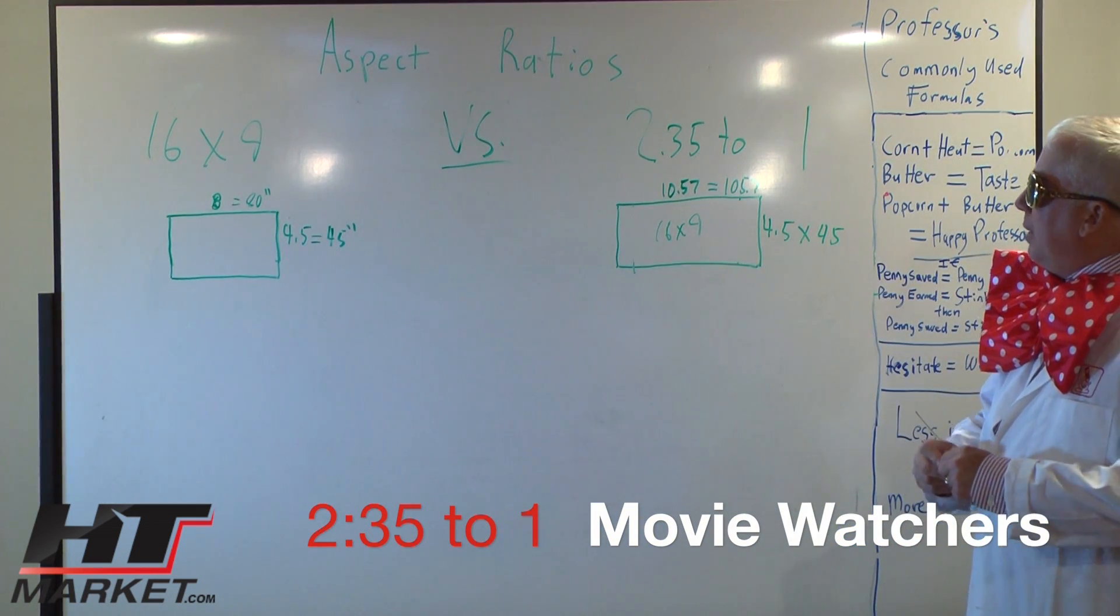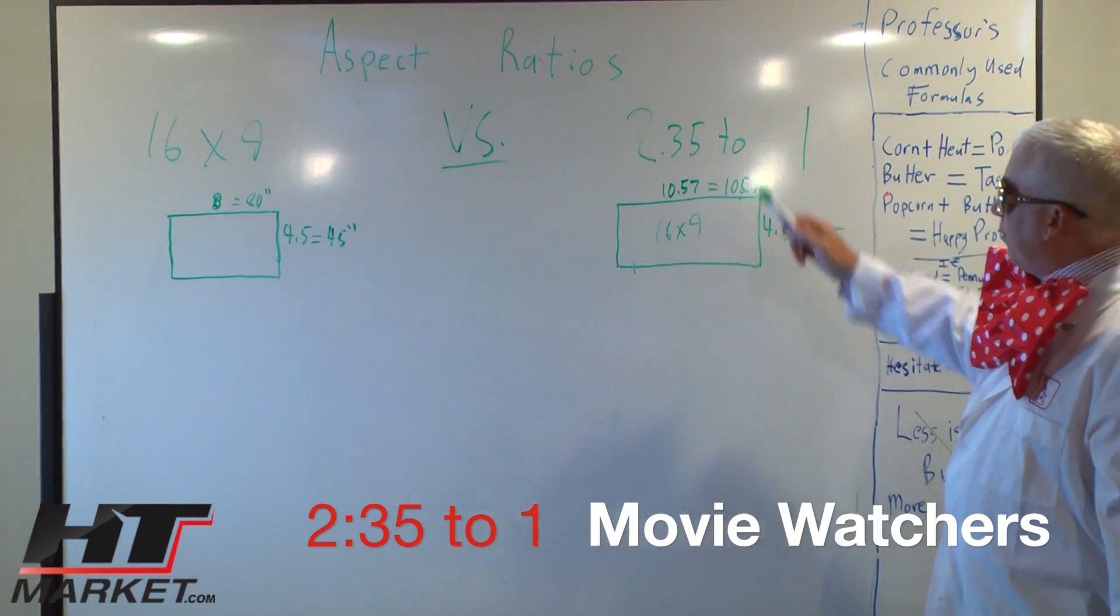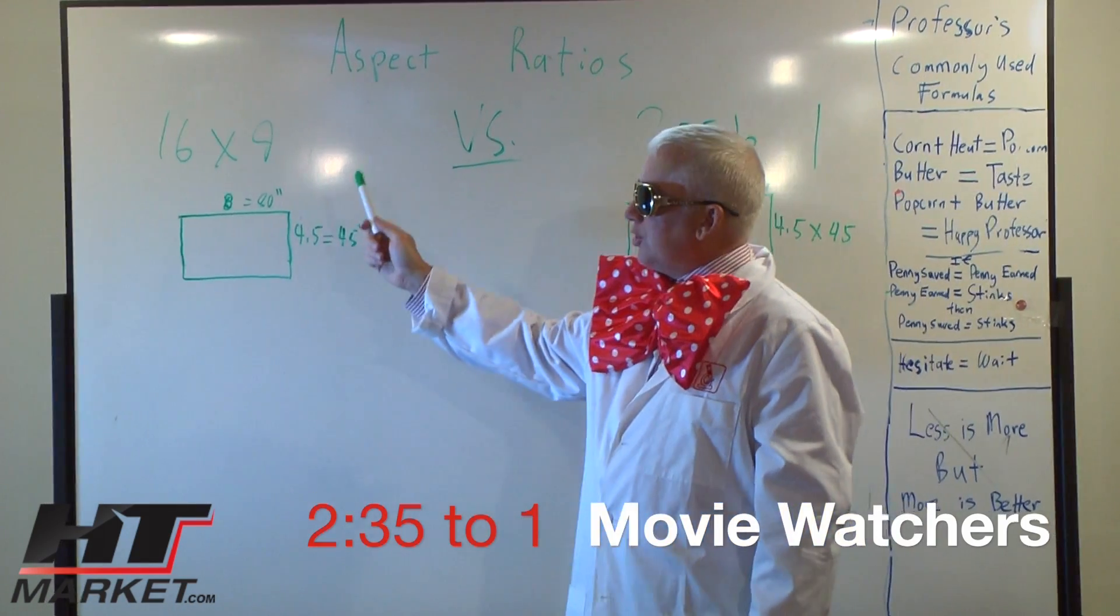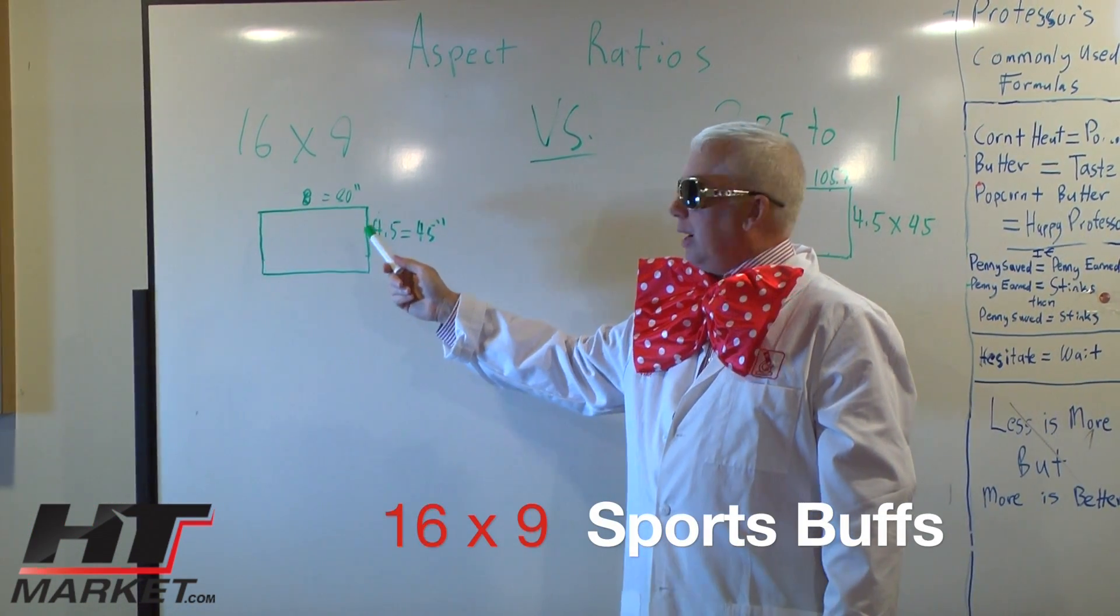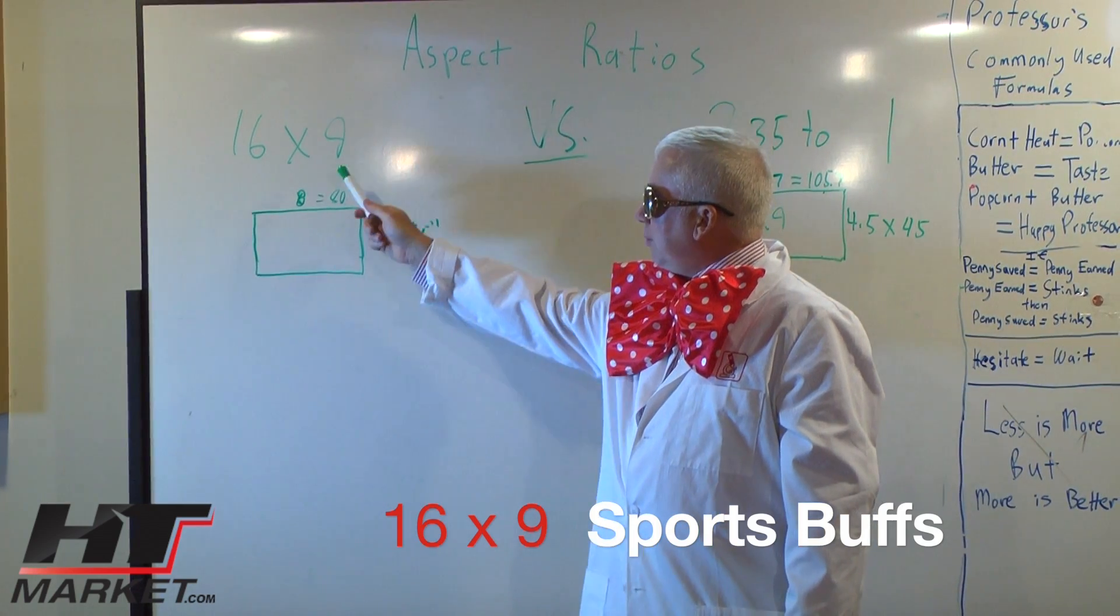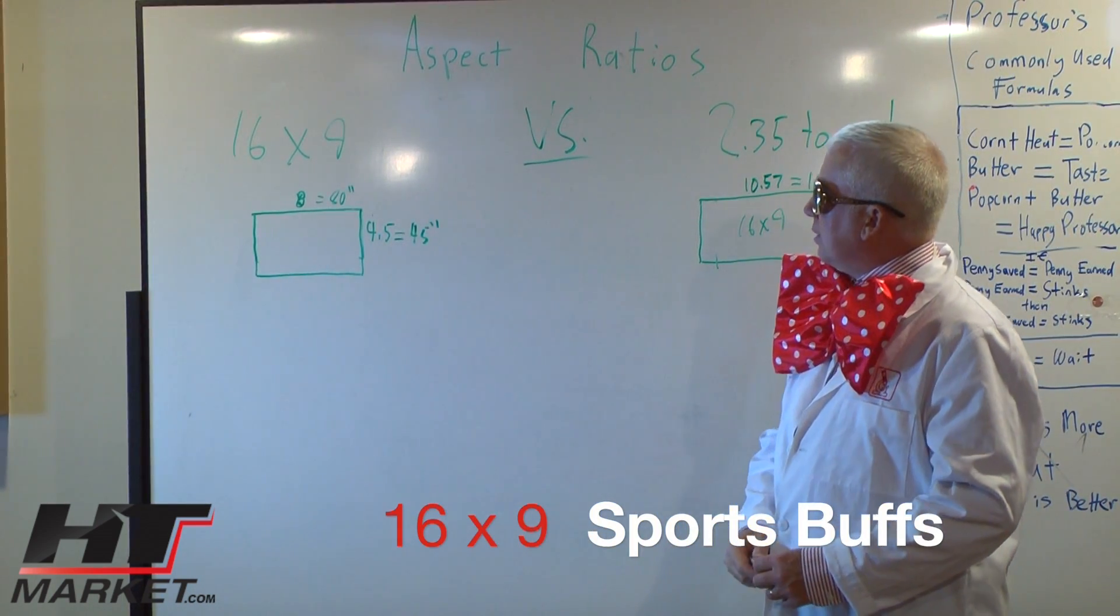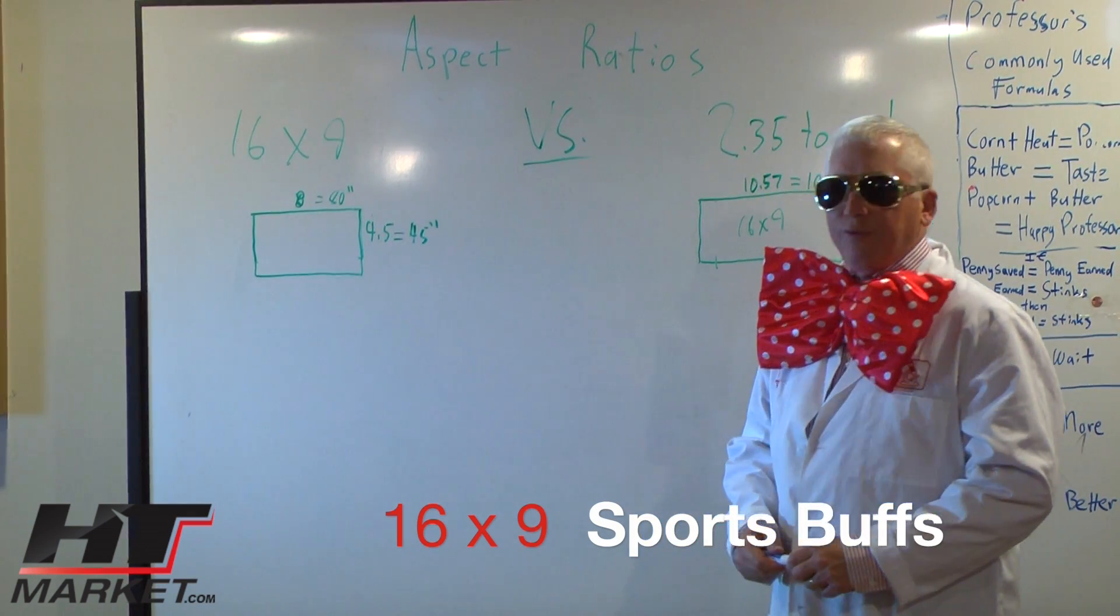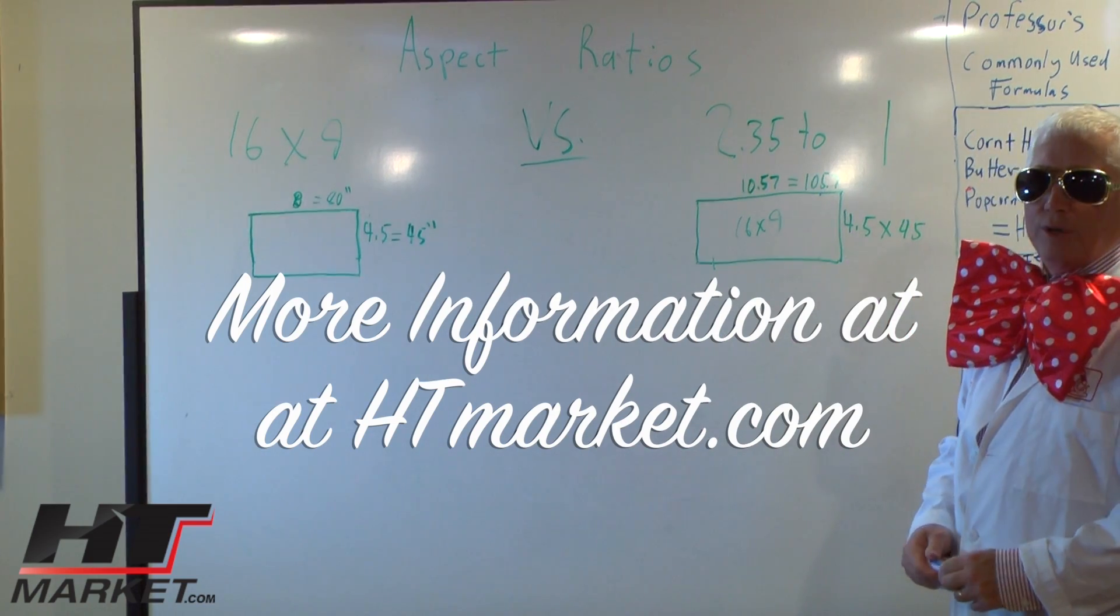We're recommending many dedicated home theaters to go with the 2.35 to 1. Now if you're doing a media room and you want to watch HDTV like football and hockey and sports, you could probably just go with the 16 by 9 format. Makes it a little easier. So that's Professor HD Theater talking to you about home theater aspect ratios.